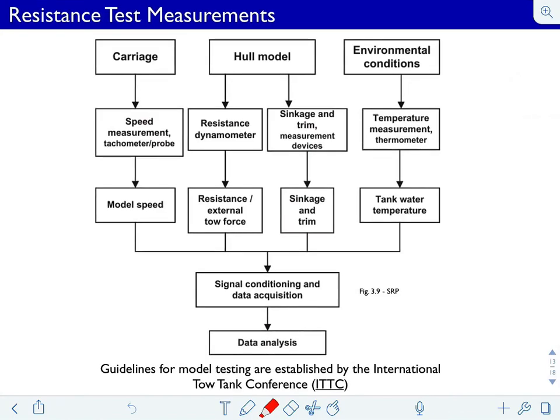The idea is you have three distinct components: the carriage, which is towing the ship along; the ship model itself; and measurements of the environmental conditions in the tank. The carriage is usually outfitted with a number of instruments. Most importantly, speed measurement of the carriage through a tachometer.